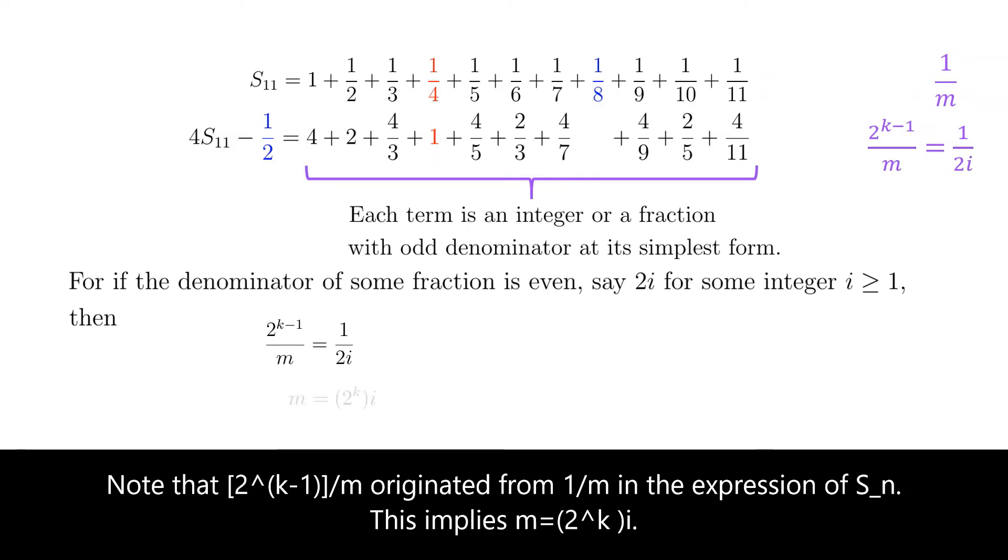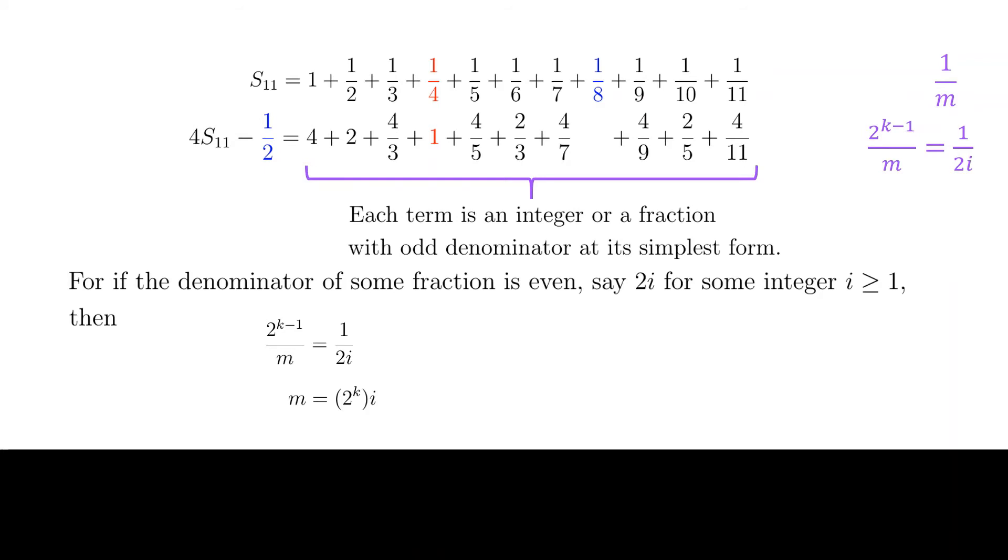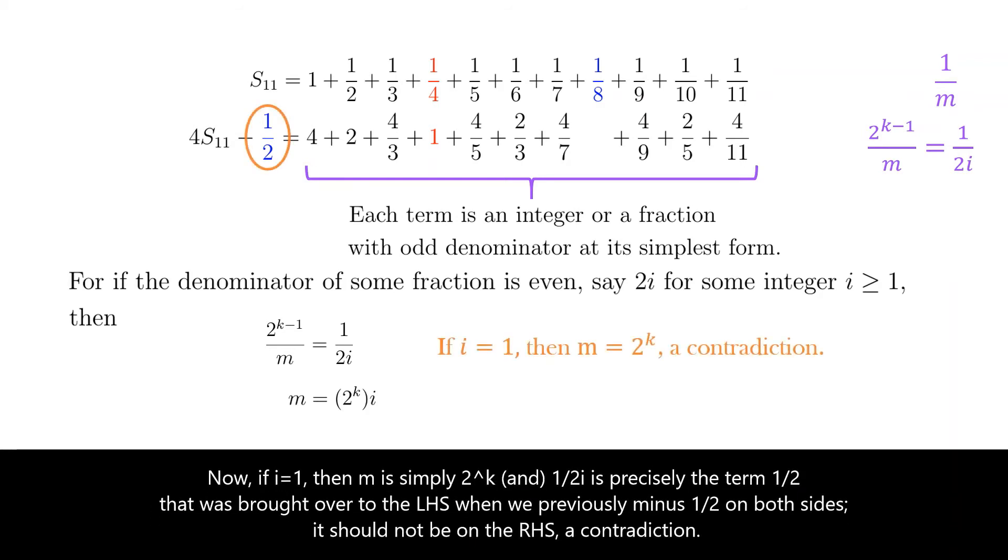This implies m equals 2 to the power of k multiplied by i. Now, if i equals 1, then m is simply 2 to the power of k. 1 over 2i is precisely the term half that was brought over to the left-hand side, where we previously minus half on both sides. It should not be on the right-hand side, a contradiction.